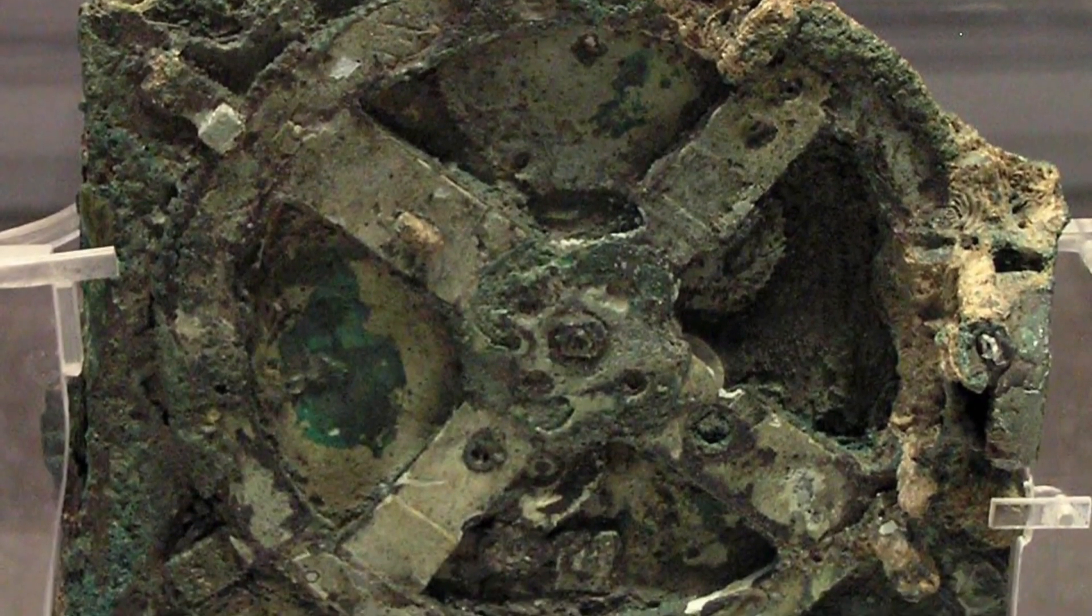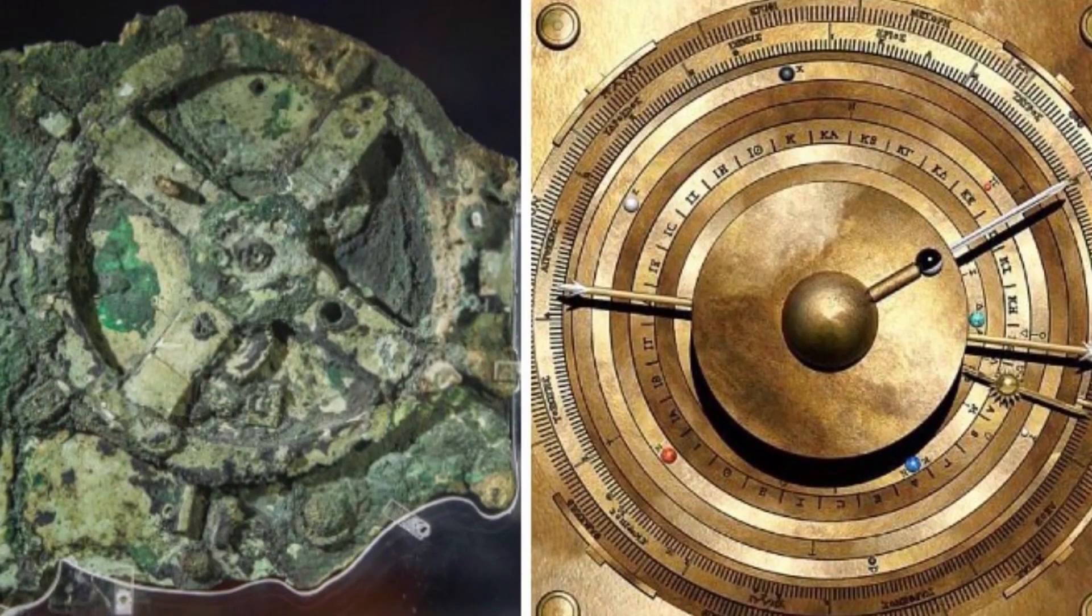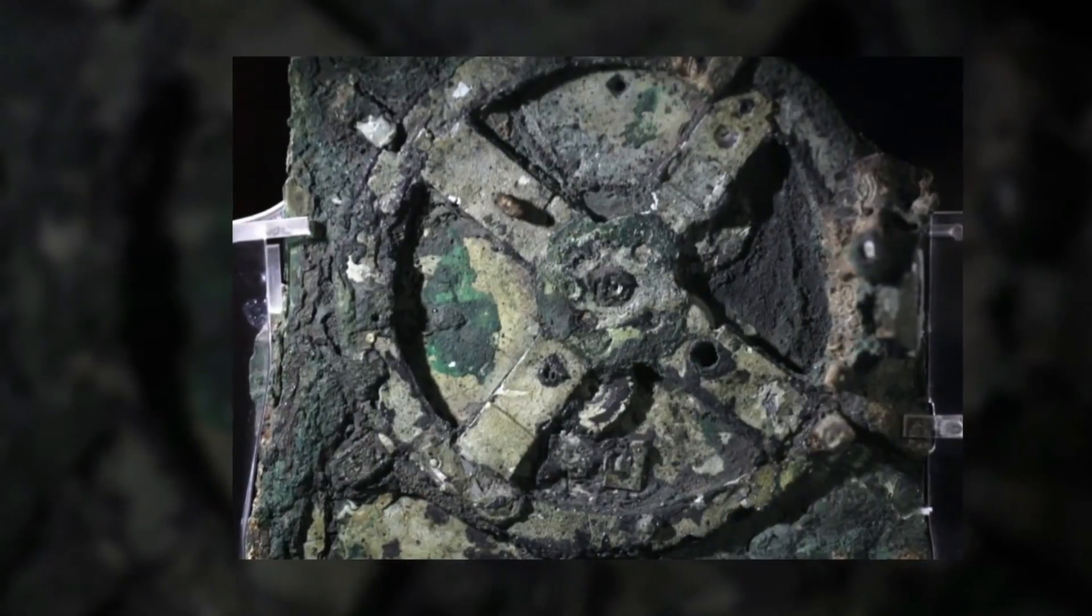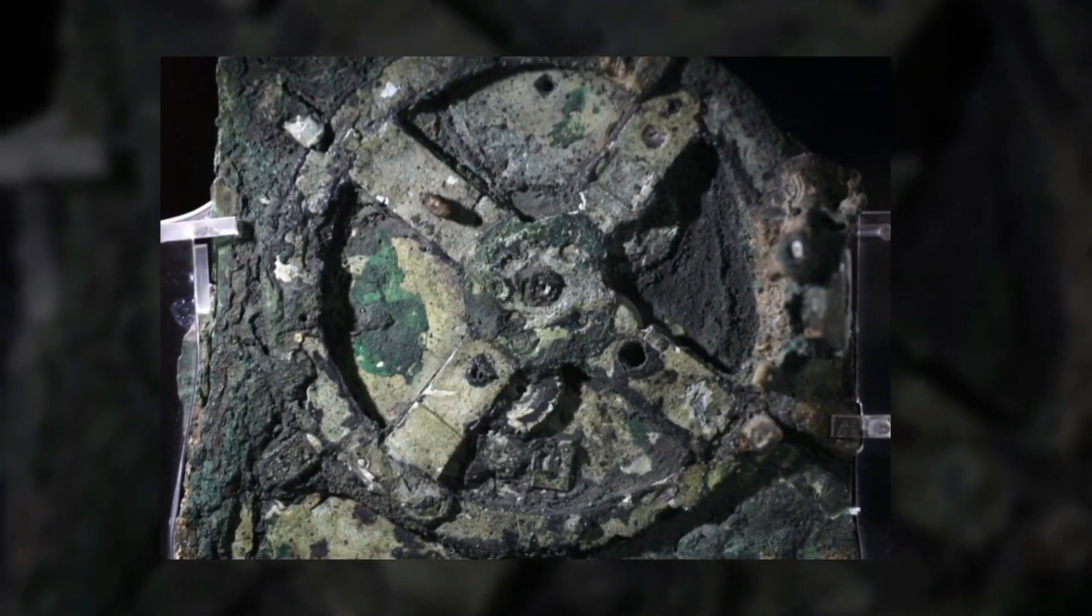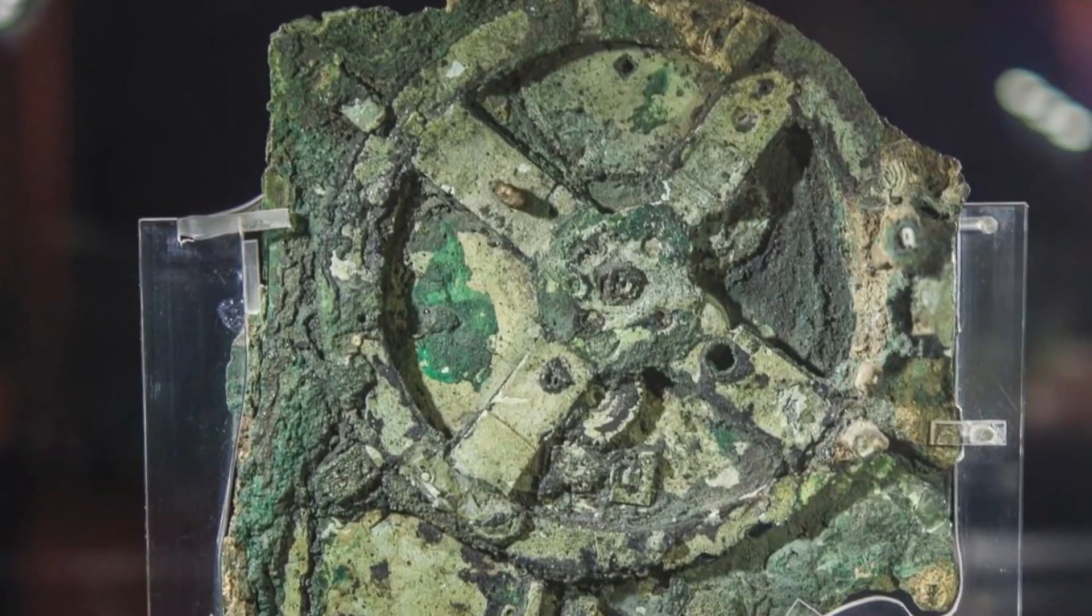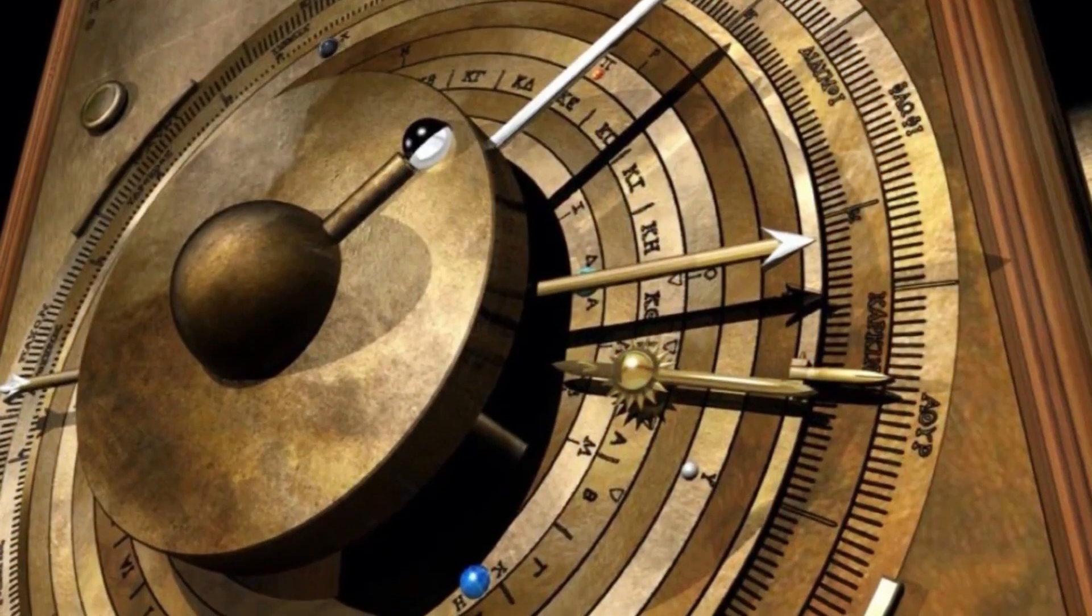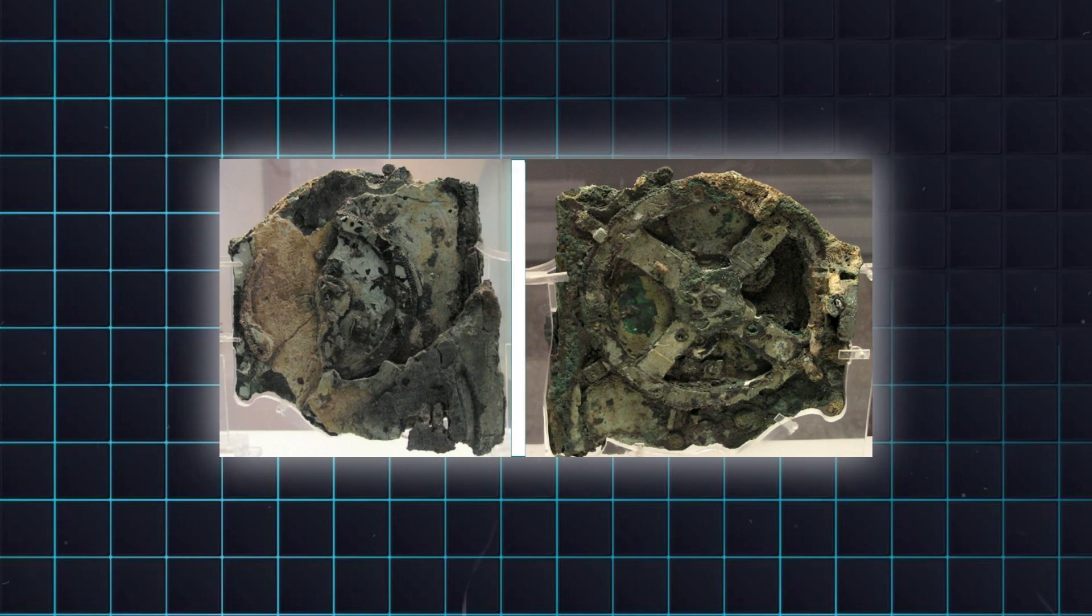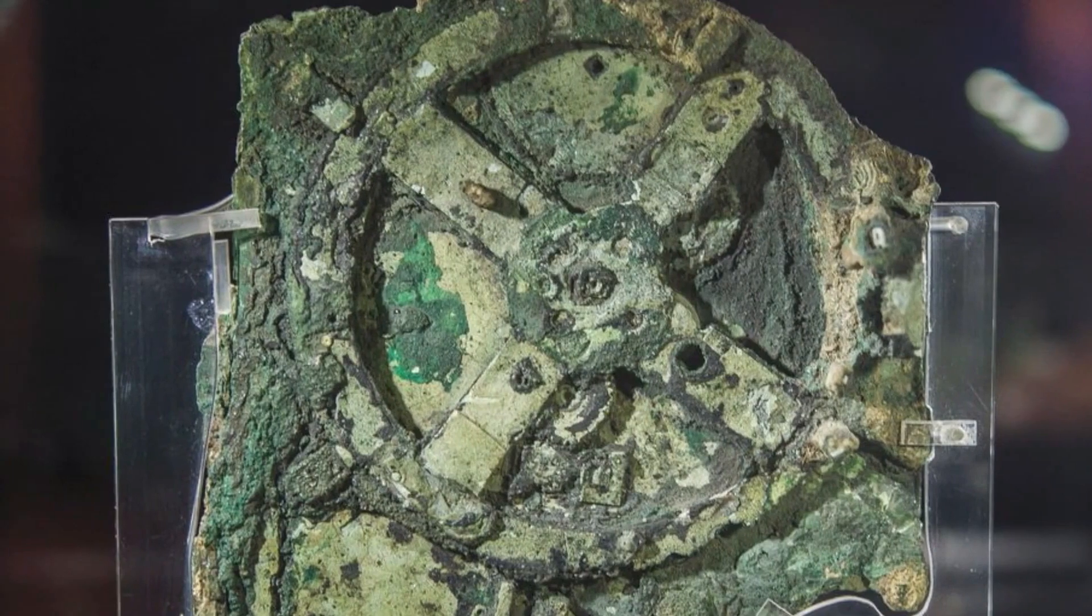The device's origins remain debated. Radiocarbon dating places its construction around 200 BCE, earlier than previously thought. Some attribute it to Greek scientists like Hipparchus, known for his work on astronomy, or Archimedes, a master of mechanics. However, the mechanism's eclipse predictions use Babylonian mathematical models, suggesting influence from Mesopotamian astronomy. This cross-cultural exchange highlights the interconnectedness of ancient knowledge.